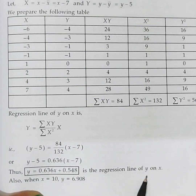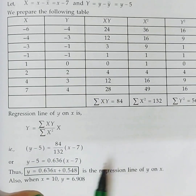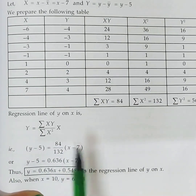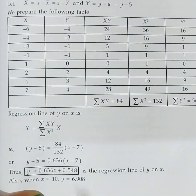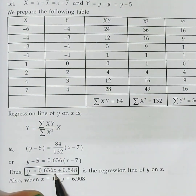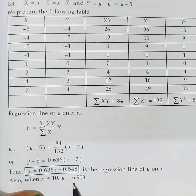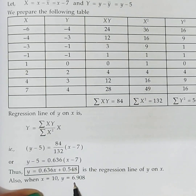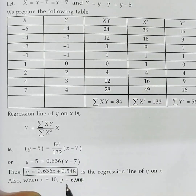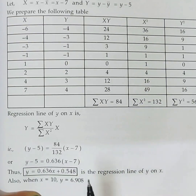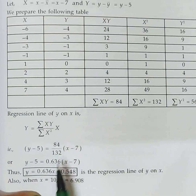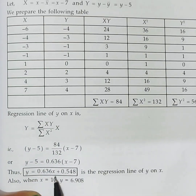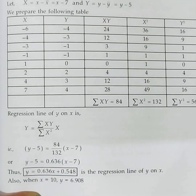The regression line of y on x formula is y − ȳ = (ΣXY / ΣX²)(x − x̄). Substituting: y − 5 = (84/132)(x − 7). Simplifying: y = 0.636x − 4.452 + 5, giving the regression line y = 0.636x + 0.548. This is the regression line of y on x. Substitute x = 10 into this equation to find the corresponding y value.